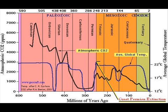CO2 in the atmosphere has increased about 30% in the Industrial Revolution, up to 0.035% of the total atmosphere of the Earth. As you can see in this chart, at one point it was 7,000 parts per million, which is about 20 times higher than it is today. And yet the temperature did not fluctuate because of that.